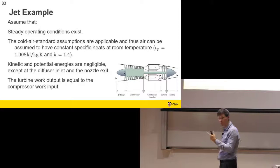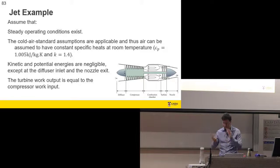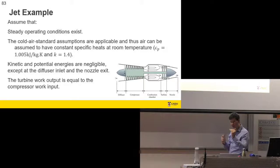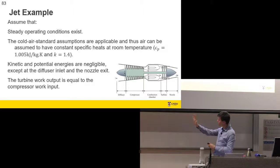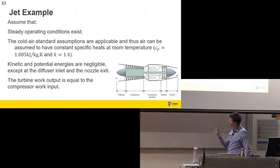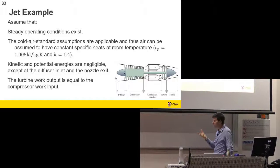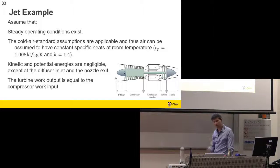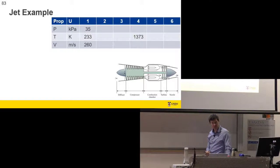Assumptions we make: steady state operating conditions - the engine isn't warming up or cooling down; cold air assumptions giving constant cp and constant k values; neglect kinetic and potential energy throughout the device, except at the diffuser inlet and nozzle exit since we must consider those otherwise we'd find no thrust; and the turbine work equals the compressor work. Typically a turbine produces slightly more than the compressor needs to run auxiliary services, but in the ideal case we set them equal.